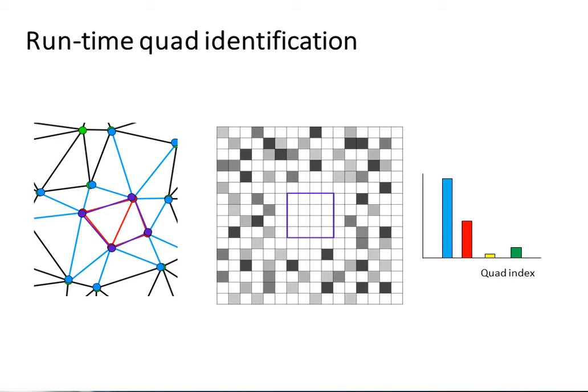Region growing around the matched quad hypothesis is used to verify the resulting correspondences between the current frame and the emitter dot pattern reference.